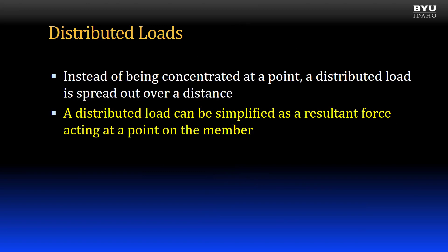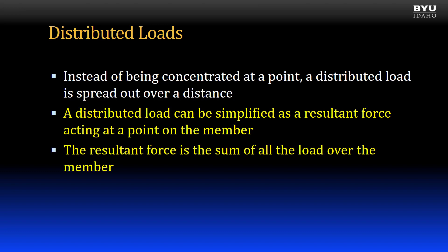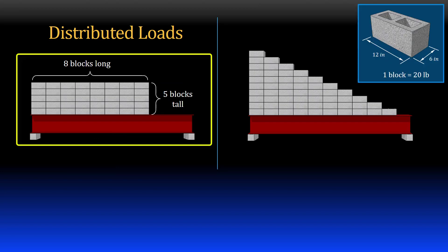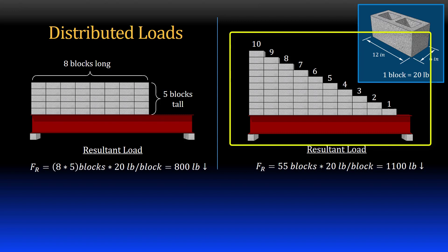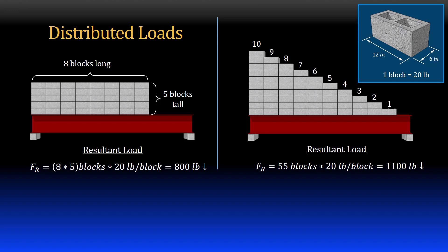A distributed load can be simplified as a single resultant force acting at a point on the member. The resultant force is the sum of all the load over the member. For the beam on the left we can calculate the resultant load by multiplying the total number of blocks times the weight of one block — 40 blocks total gives a resultant force of 800 pounds. For the beam on the right there are a total of 55 blocks; at 20 pounds each the resultant force is 1,100 pounds. These resultant loads are acting downward.